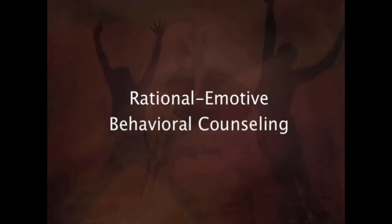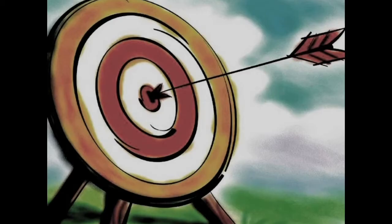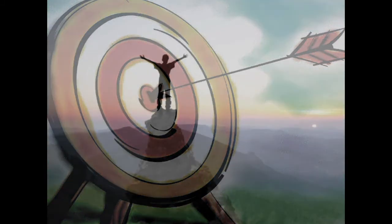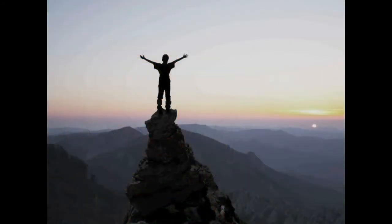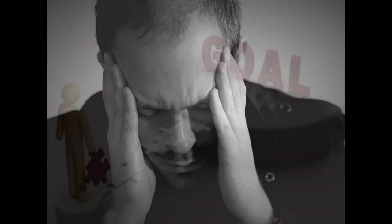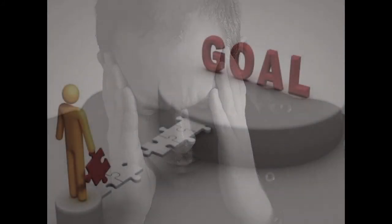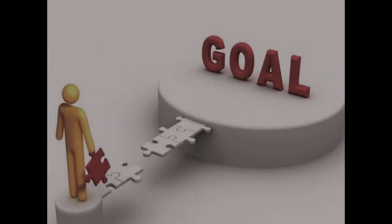Another important form of counselling is rational emotive behavioural counselling. This form helps the client to establish goals in life — at least two goals: to live happily and also to be happy. This form of counselling helps the client to remove the obstacles that people themselves most often place in their own way, and to identify those obstacles and re-establish a balance between short-term and long-term goals.